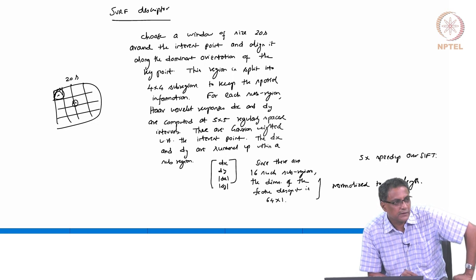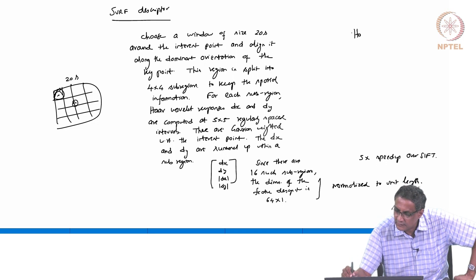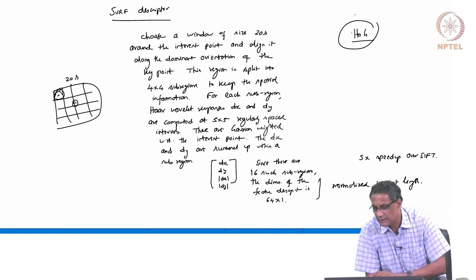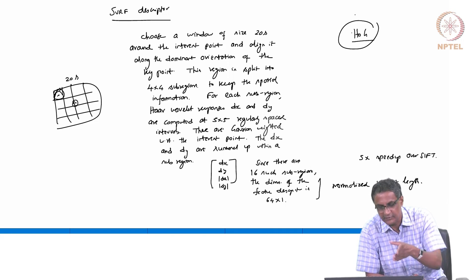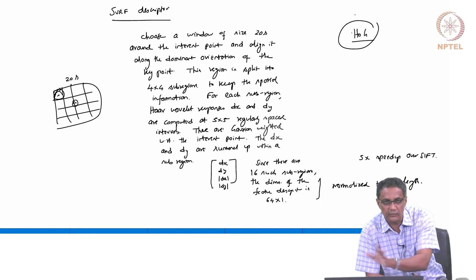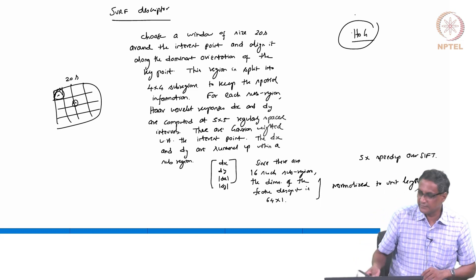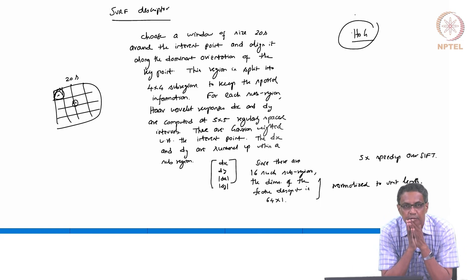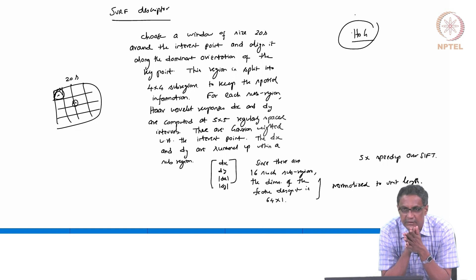There is one more thing called the Histogram of Oriented Gradients, or HOG, but it is very similar to what we have already done in terms of orientation binning, except that it is actually a dense filter. You get dense points whereas here you get sparse points — that is the only difference. The idea is very similar, so there is no point spending much time on it; you can just read it up now that you have so much background in feature detection.